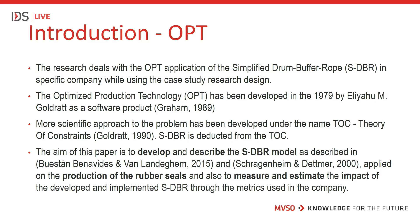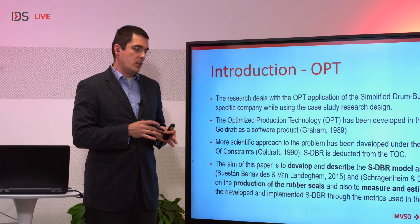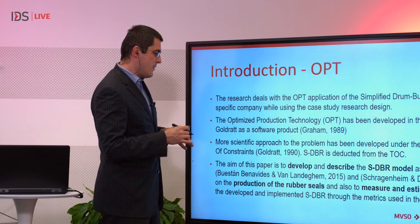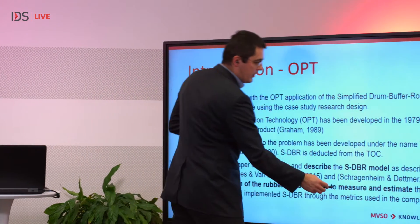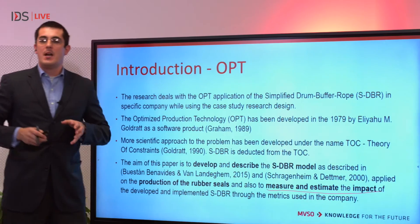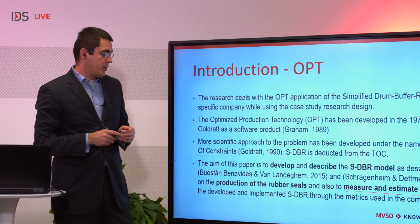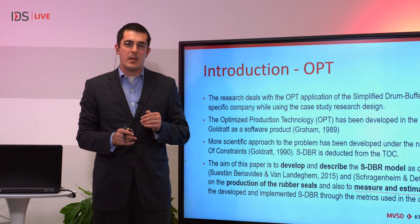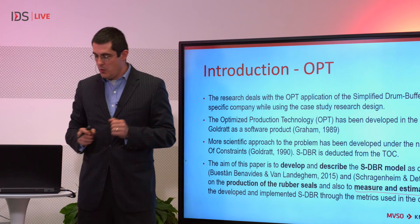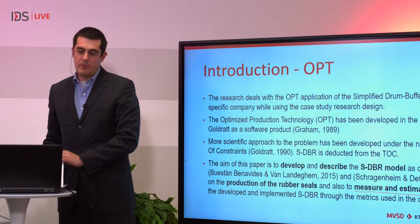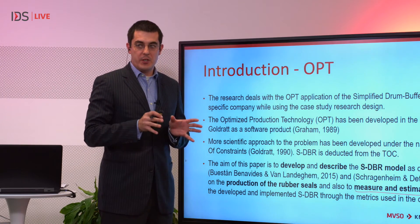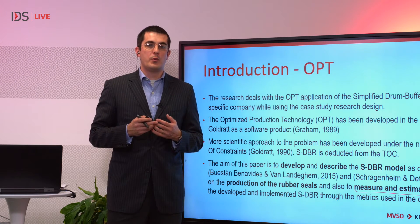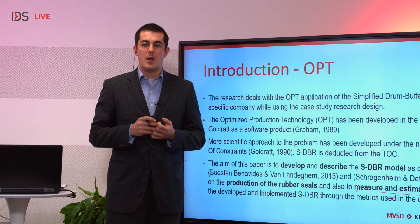This idea stands behind the theory of constraints. What we tried to research was how to develop a model of the simplified drum buffer rope and measure its impact when applied in a rubber seal production company. That company had approximately 181 employees at the time, with a turnover of around 35 million euros per year. The research question was: how to implement the SDBR model and what will be its measurable outcomes?